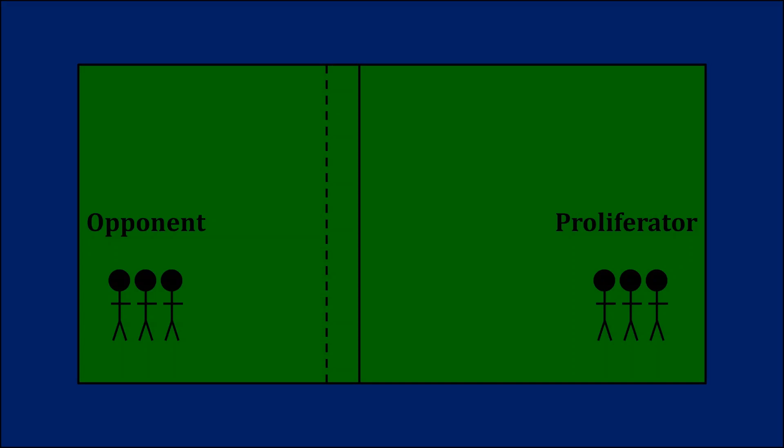But the opponent doesn't have to offer that full amount. It can steal a little bit more for itself and draw the border at where that solid line is. Everything in between the dashed and the solid line is the extra stuff the opponent can steal. The reason the potential proliferator is okay with this is that by accepting the agreement, it's also avoiding having to pay the costs associated with those weapons. So it's happy as well.